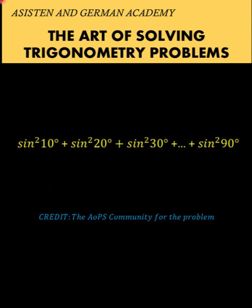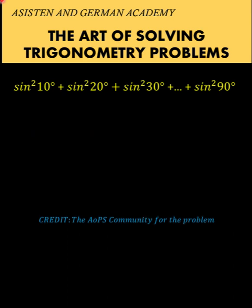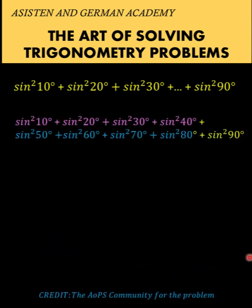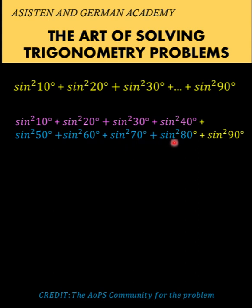Now let's solve this problem together. Let's begin by listing down all the other terms that are missing in this list. So after sine squared of 30 degrees, we have sine squared of 40 degrees, sine squared of 50 degrees, sine squared of 60 degrees, sine squared of 70 degrees, sine squared of 80 degrees, up to sine squared of 90 degrees.